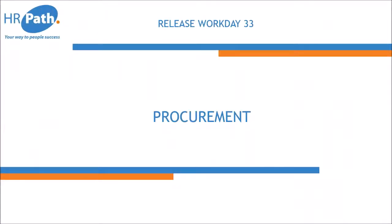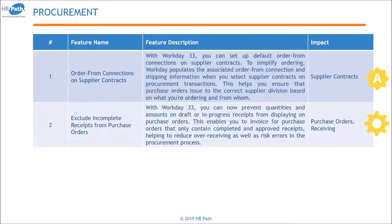Moving to procurement, the first new feature is the ability to order from connections on supplier contracts. There's a new field on supplier contracts where you can indicate shipping information on procurement transactions. This helps ensure purchase orders are issued to the correct supplier based on what you're ordering and from whom. Once set up on the supplier contract, the order-from connection flows through to the purchase order, receipting, and invoice.